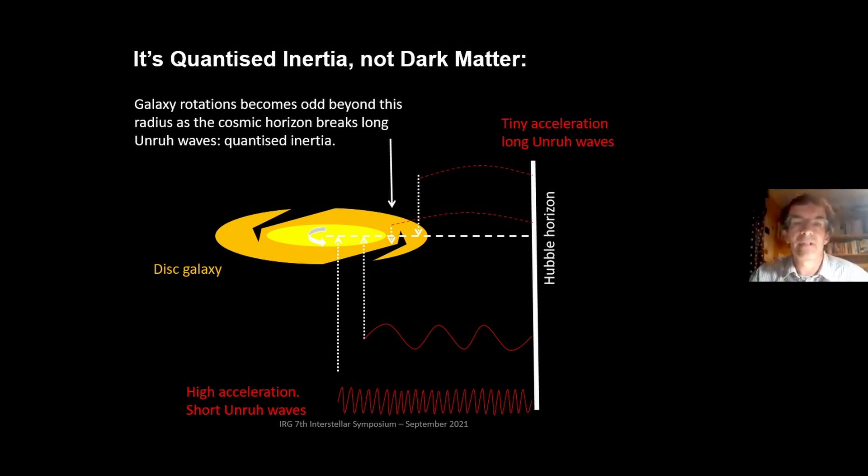But not only that, there's direct evidence. If you look at a galaxy, in the center the stars are accelerating rapidly, so they see short Unruh waves as I've shown on the bottom with this red sine wave. As you go out to higher radii, the Unruh waves lengthen, so you can see that here. At exactly the radius at which the acceleration of the stars is such that it produces Unruh waves the size of the cosmos, then that's exactly the point at which the galaxy starts to misbehave. So that's very direct evidence for Quantized Inertia and for Unruh radiation.